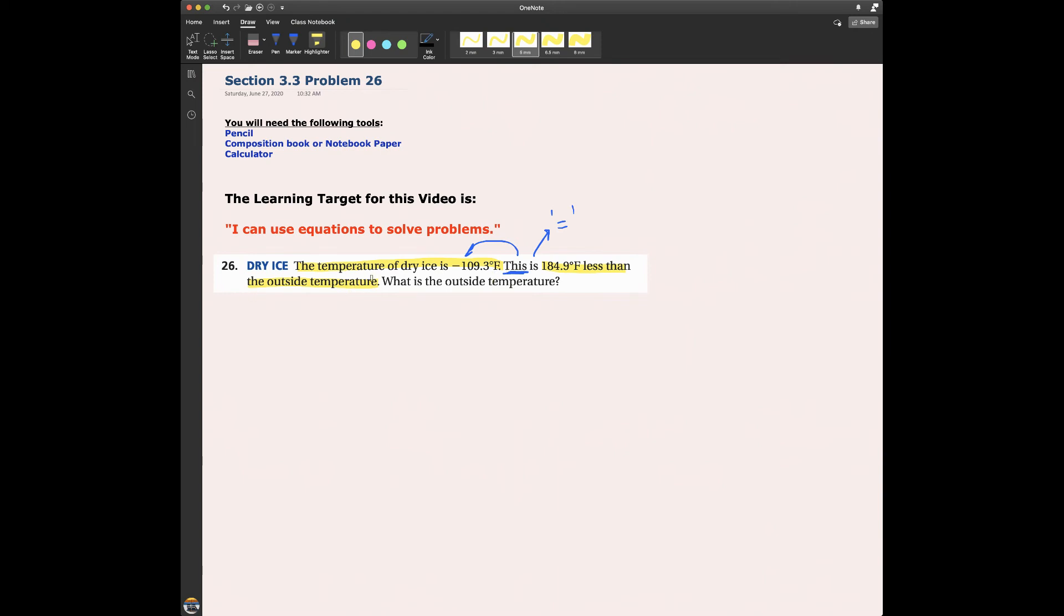The outside temperature, we actually don't know what it is. So I'm going to use a variable. This outside temperature, I'm going to use the variable x to represent that. And then the problem says, what is this outside temperature?